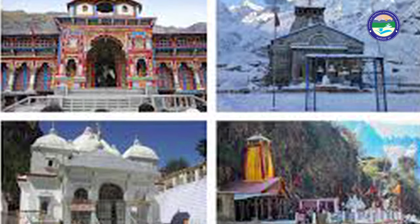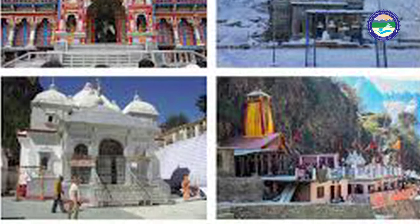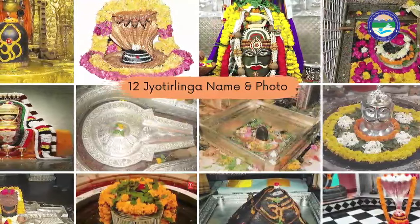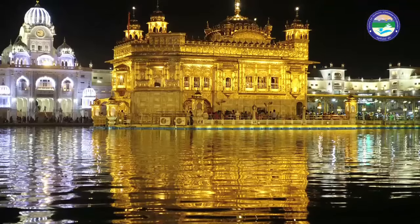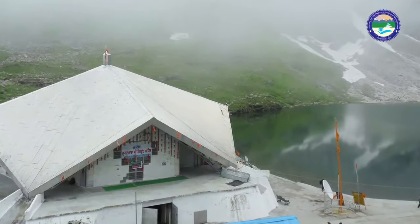Spiritual purposes: when a person travels to any religious destination in order to pray to his god and goddesses, that kind of tourism motivational factor is known as spiritual purposes. Such as our Char Dham — Badrinath, Rameshwaram, Dwarka — and the Chota Char Dham which includes Badrinath, Kedarnath, Gangotri, and Yamunotri. All these tourists travel to pray and fulfill their desires. We can also include our 12 Jyotirlinga, the Golden Temple, and Hemkund Sahib in spiritual purposes.